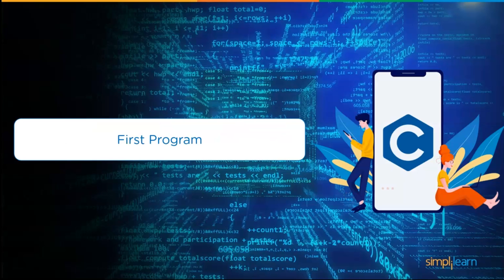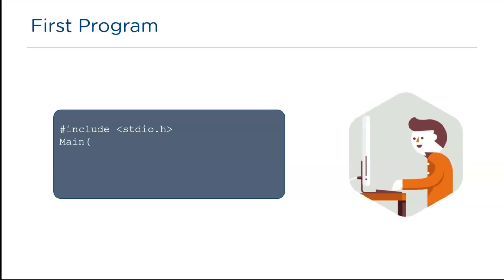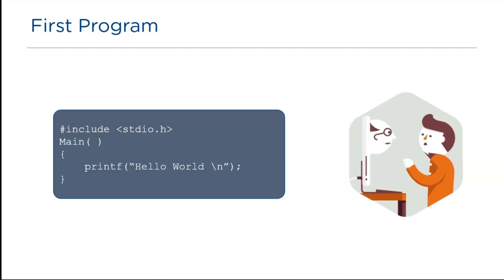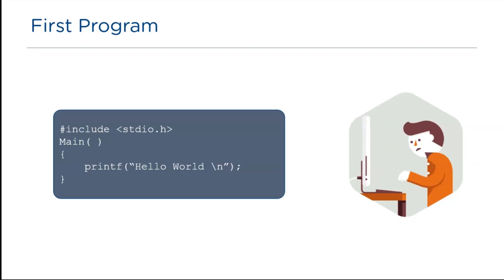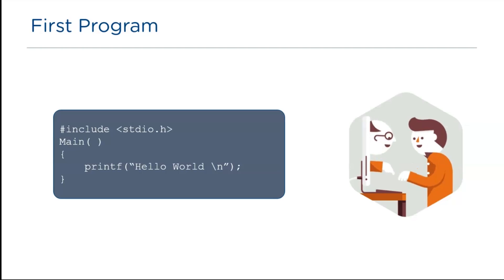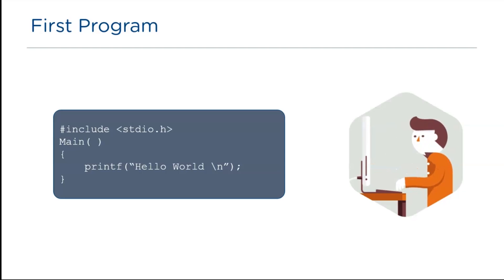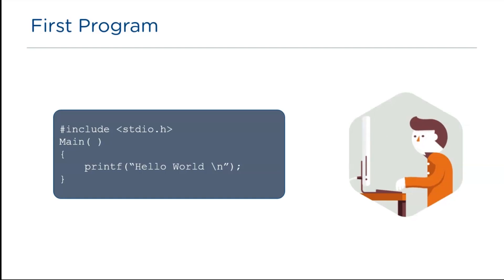Let me now move on to the main part of this video — your first C program. In C programming, hash include is used to direct the compiler to load the header files in the program. stdio.h is a header file that stands for standard input output, and various functions such as printf and scanf are defined in the standard input output header file. Main is a function from which every C program execution begins. The printf function is used for output, so in this program, hello world is the output. Backslash n is called an escape sequence, which denotes the newline character.